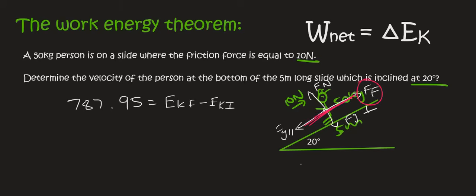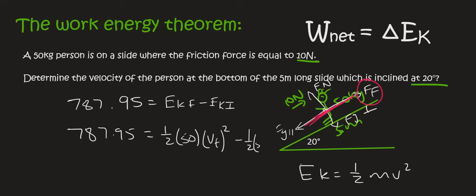Now kinetic energy is equal to a half mv squared. And so 787.95 is equal to a half, then the mass of the object is 50. The velocity final, that's what we're trying to calculate, so we don't know what that is.